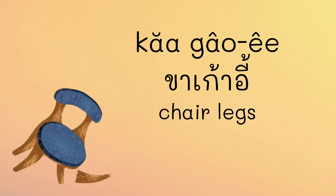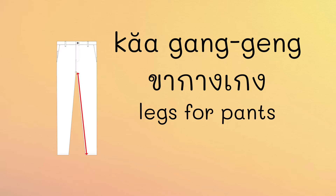Similarly, ขาเก้าอี้ — ขาเก้าอี้ means chair leg, both falling tones. Additionally, ขา can refer to the part of pants or trousers legs, which we call ขากางเกง.